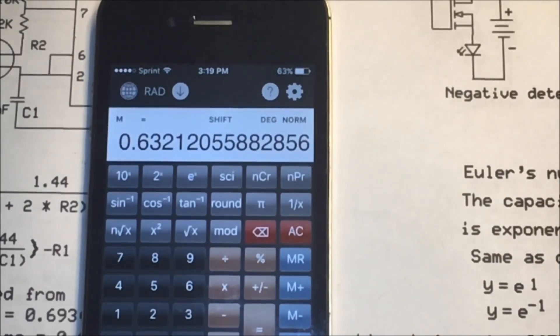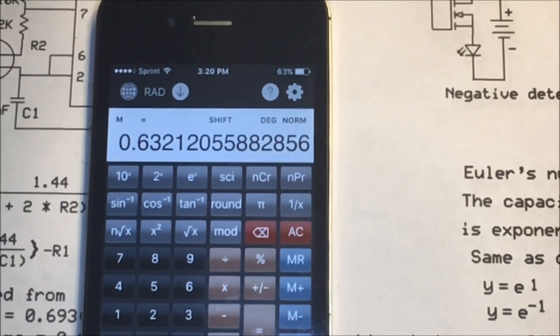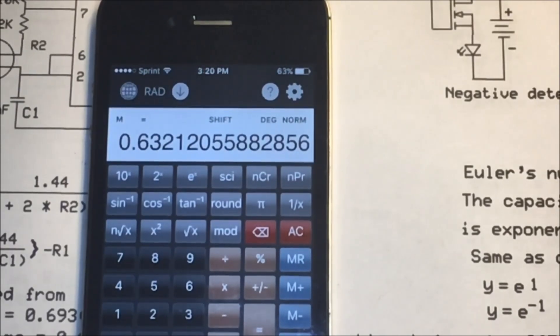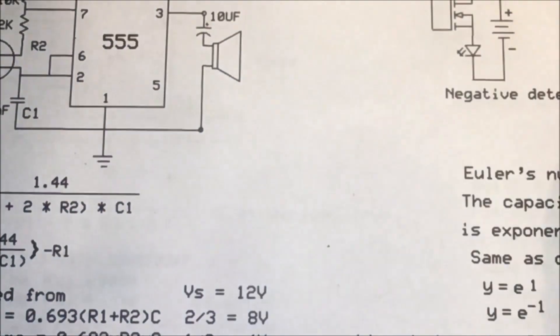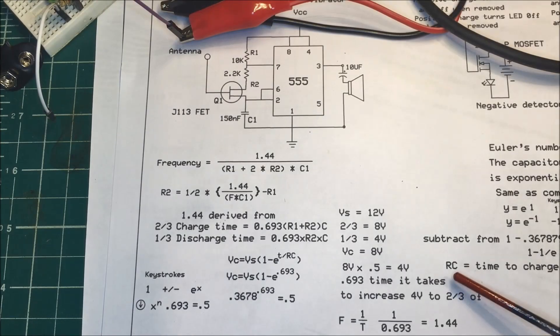And then we plus 1 to that and that gives us 0.63 or 63%. So your RC, your resistance times the capacitance, gives you the time it takes for the capacitor to rise from zero volts up to 63% of your source voltage. And that's where this Euler number comes in. So we know that the resistance times the capacitance is going to give us the time that it takes for the capacitor to rise up to 63% of our voltage source.